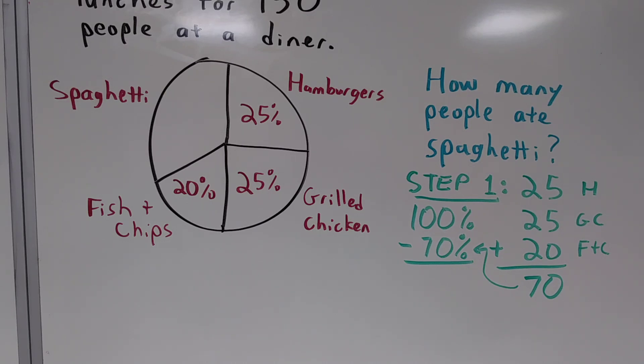We find out that 70% ate everything other than spaghetti. So if we take that percentage, subtract it from everything, that's 100% of course, we get 100% minus 70%. So that's everything minus everything but spaghetti, and that will give us the percentage of people who ate spaghetti.